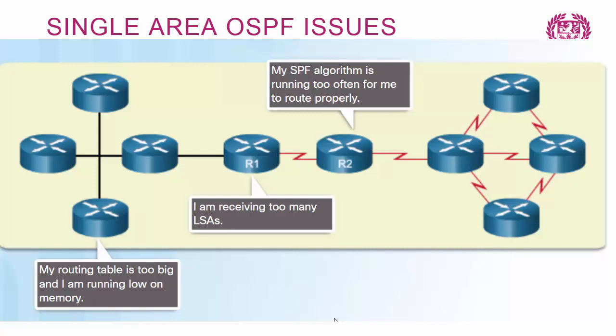Looking at the issues with single-area OSPF: every router in the whole OSPF area has to run the shortest path first algorithm to calculate the best path to all other routers and networks. If we have too large a network, whenever there is a change in topology, LSAs are flooded to each router and the routers have to rerun the SPF algorithm. This brings performance issues. Also, routing tables become too large and routers may run out of memory. So the issues are: SPF runs too often, routers flood too many LSAs, and routing tables get too big.